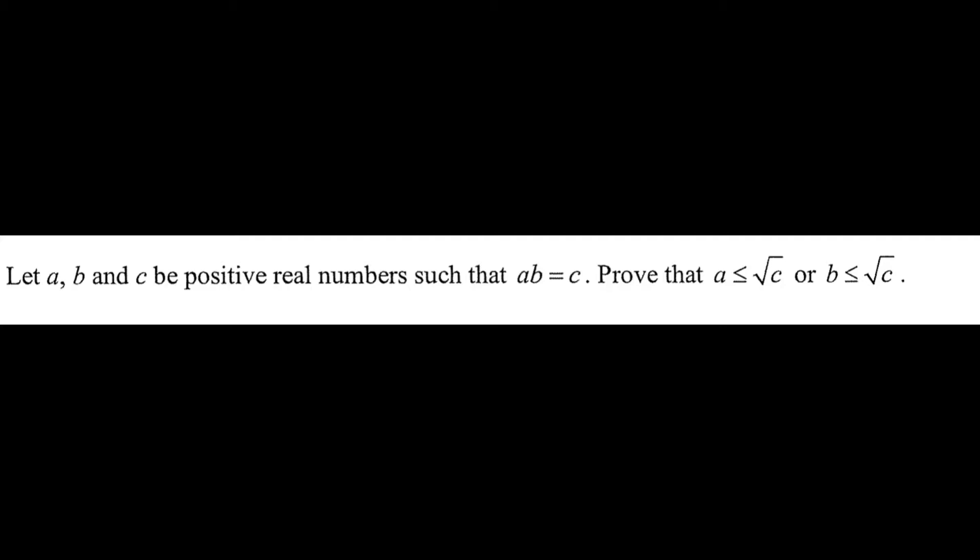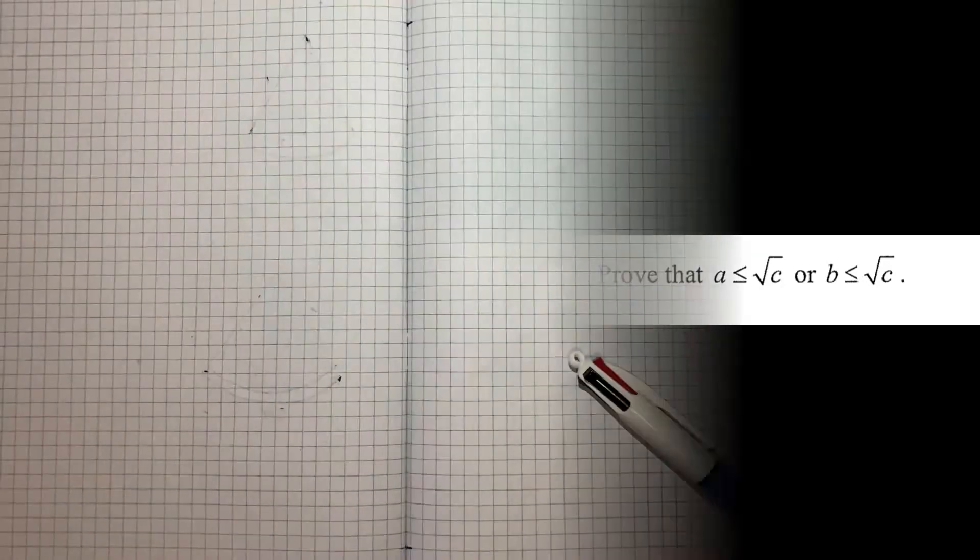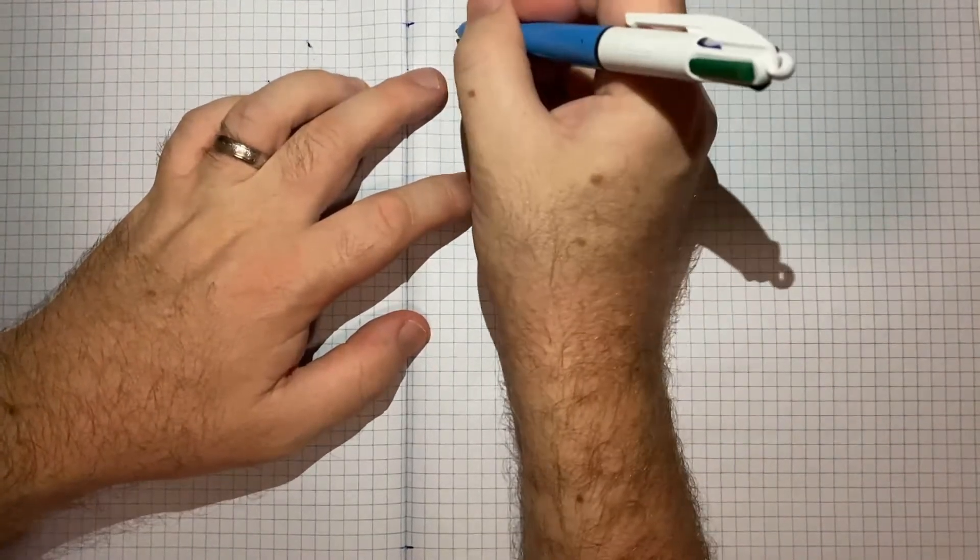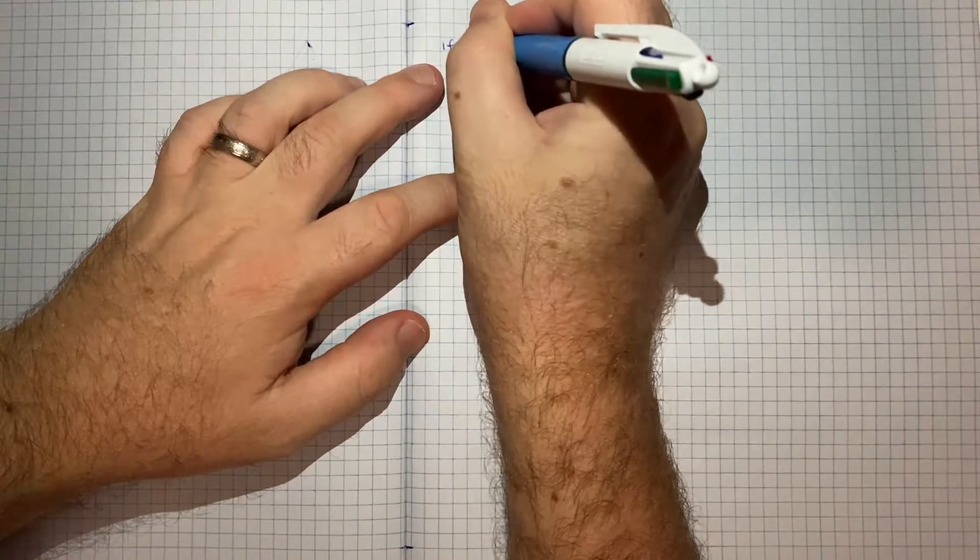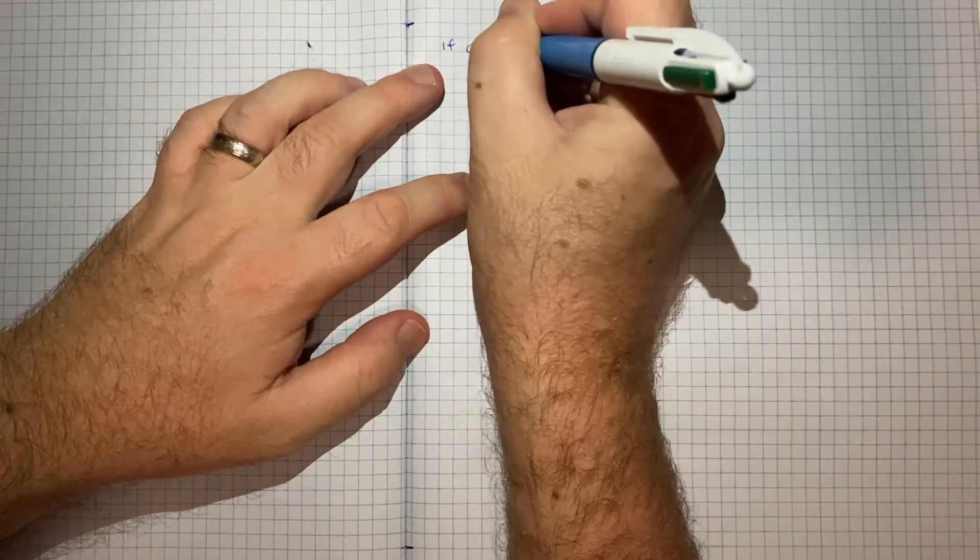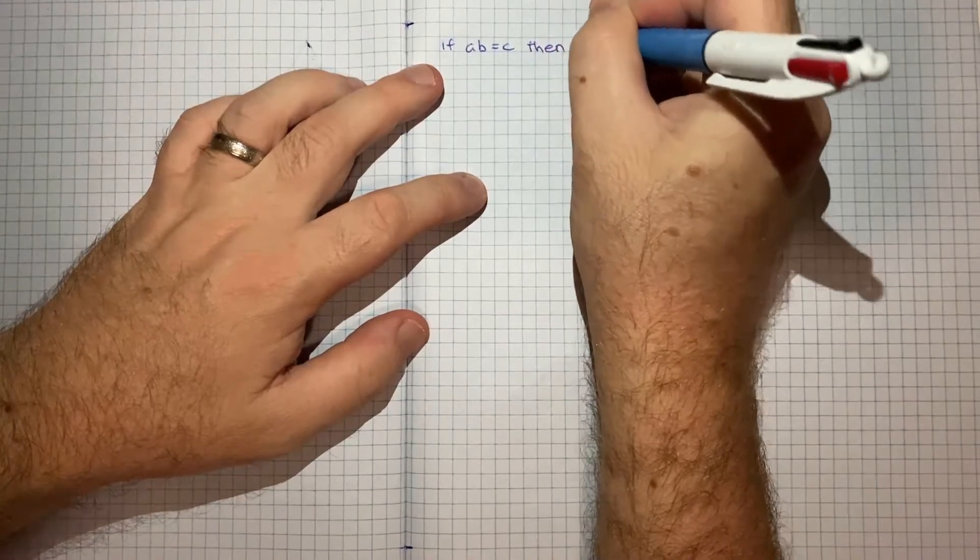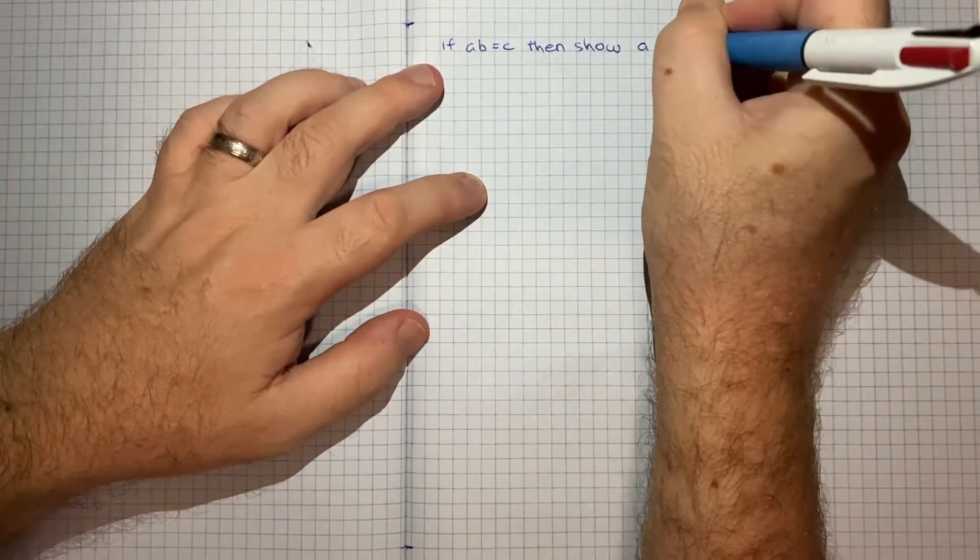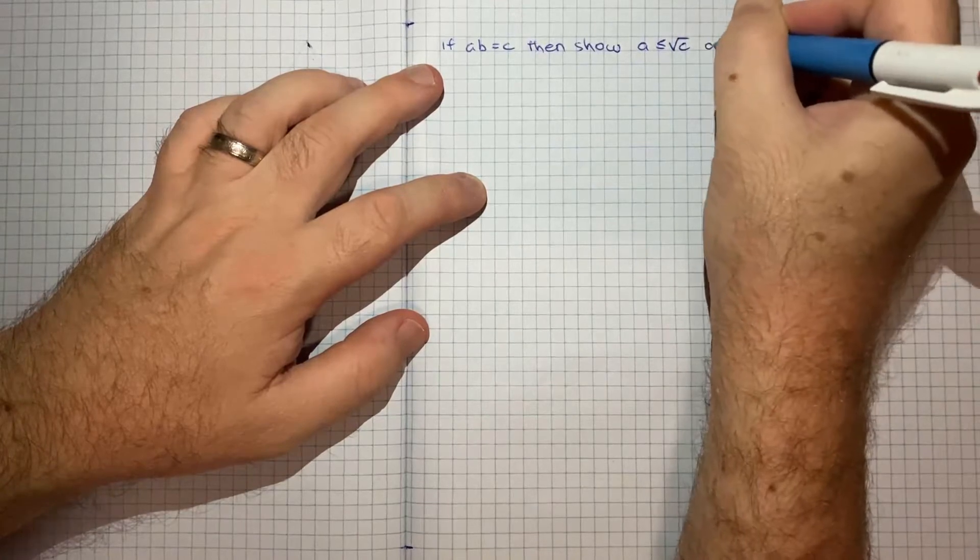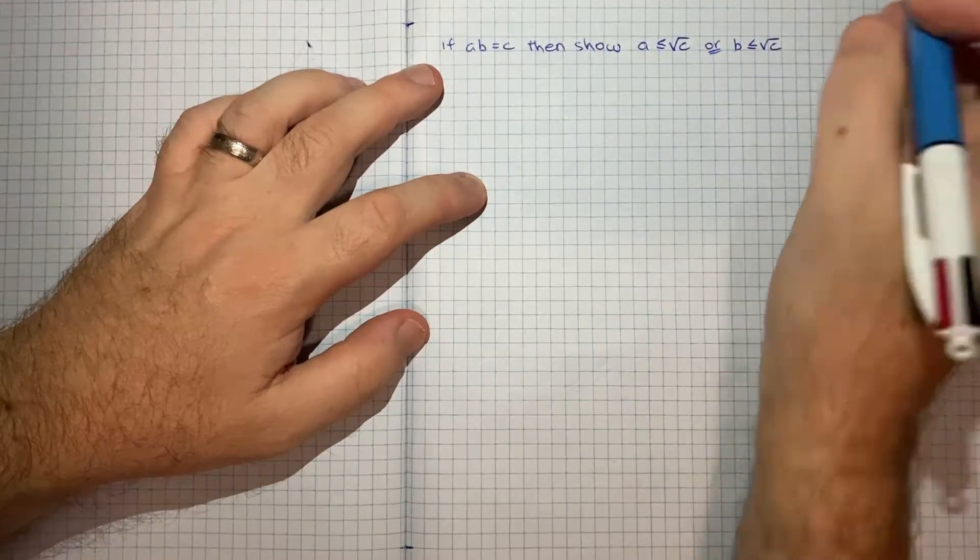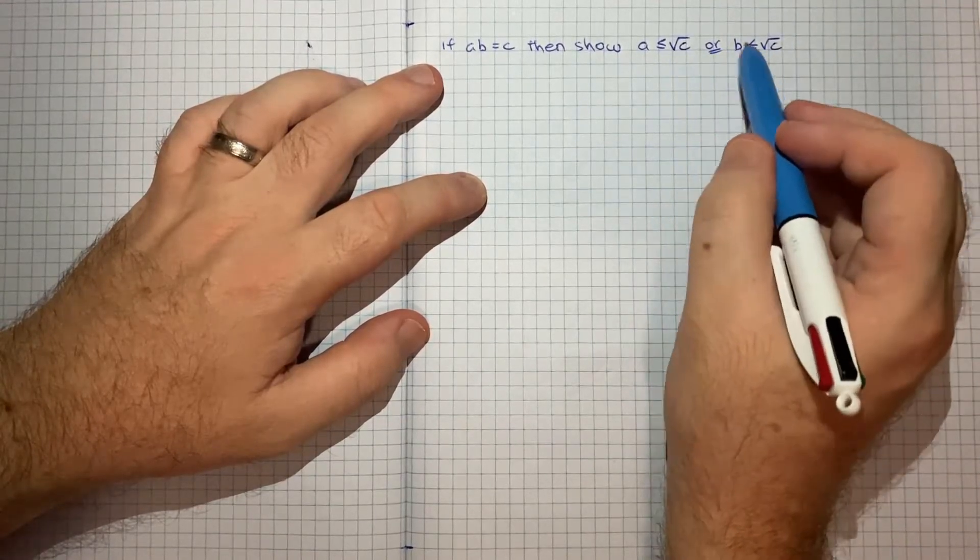Prove that a is less than or equal to root c or b is less than or equal to root c. So we're being asked to basically show that if a times b is equal to c, then show a is less than or equal to root c or b is less than or equal to root c. So either of those two things must be true.